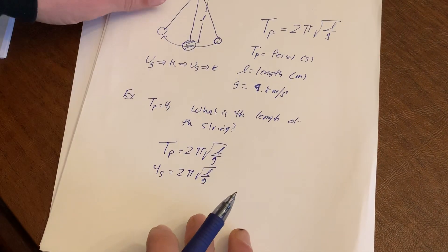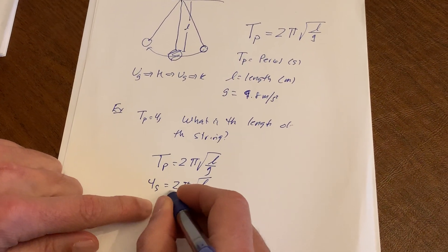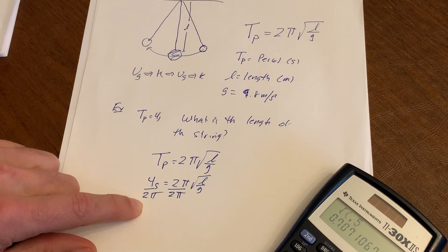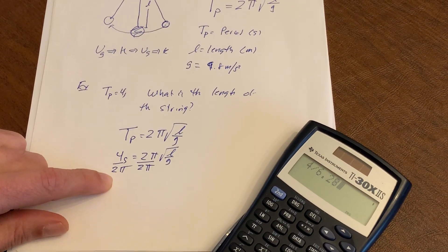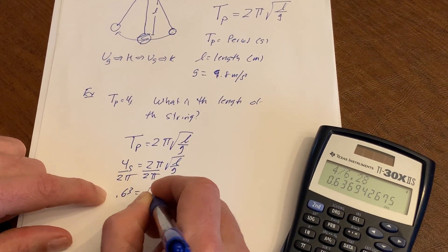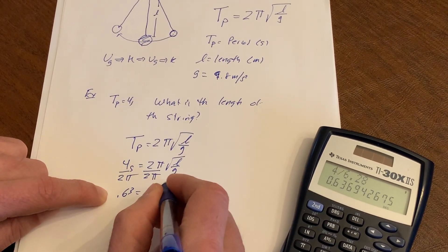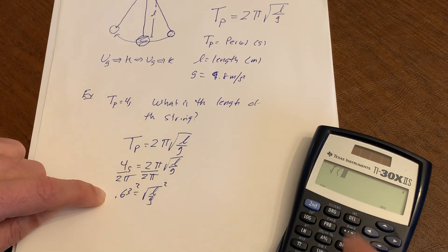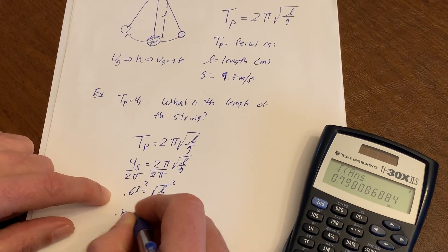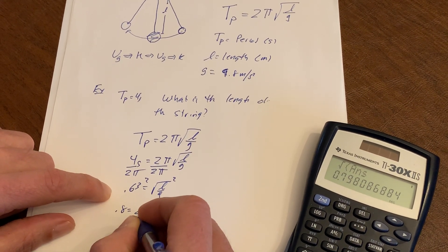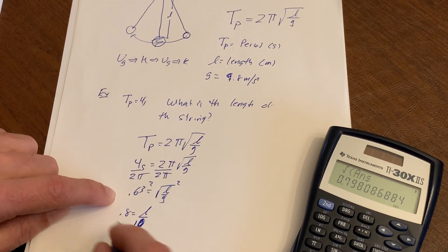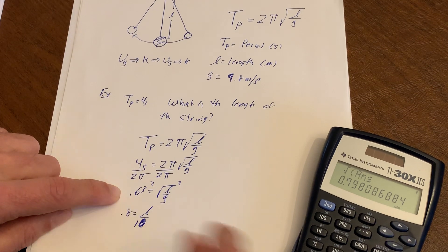Period of a pendulum is equal to 2 pi radical L over G. Alright, what am I given? Well, I'm given the time, which is going to be four seconds. So that's going to be 2 pi radical L over G. Alright, how am I going to handle this? Obviously, I'm going to have to take the square root at some point, but let's deal with this 2 pi over here. So I'm going to divide by the 2 pi. I'm going to divide by 2 pi. So let's see, what do I got here? Four divided by 6.28. So I get about 0.63 is equal to radical L over G. Looks like I'm going to have to take the square root, square root. So I'm going to square root that guy.